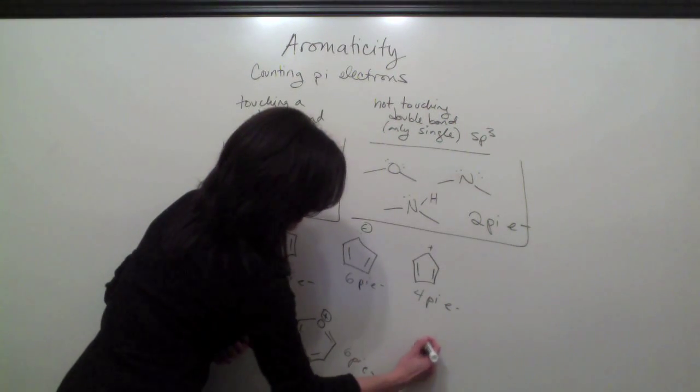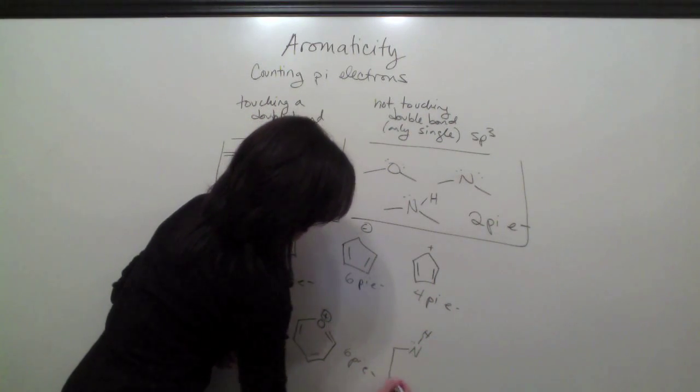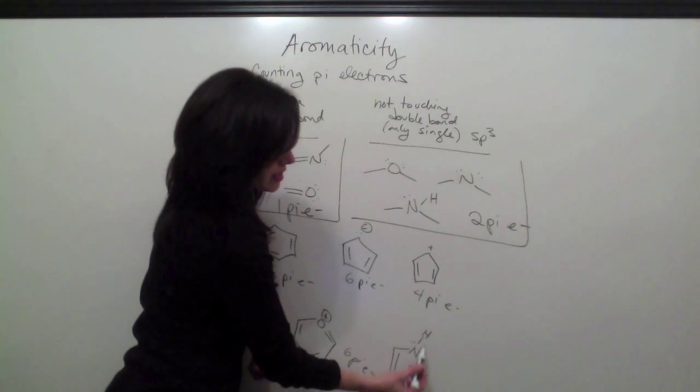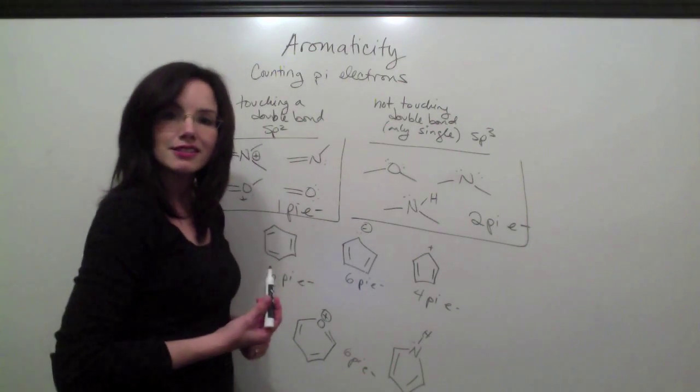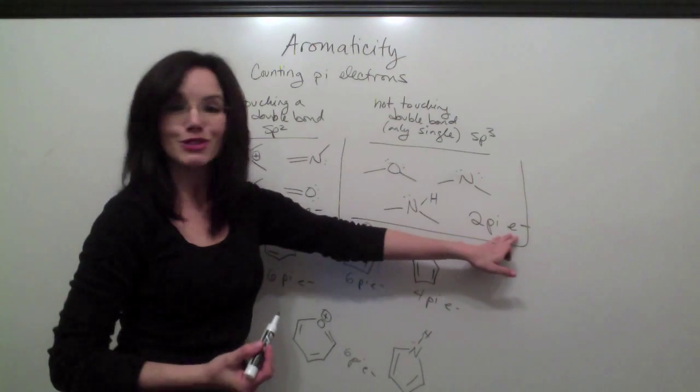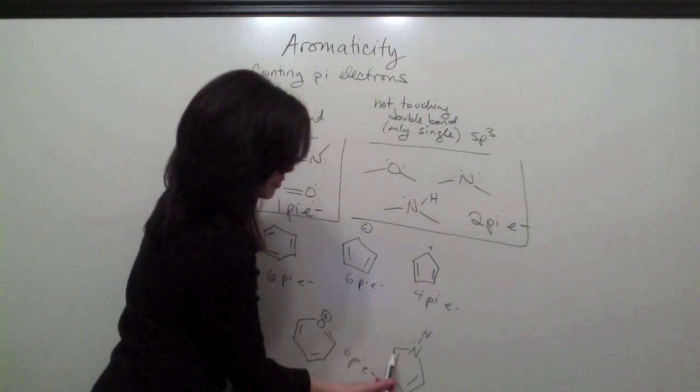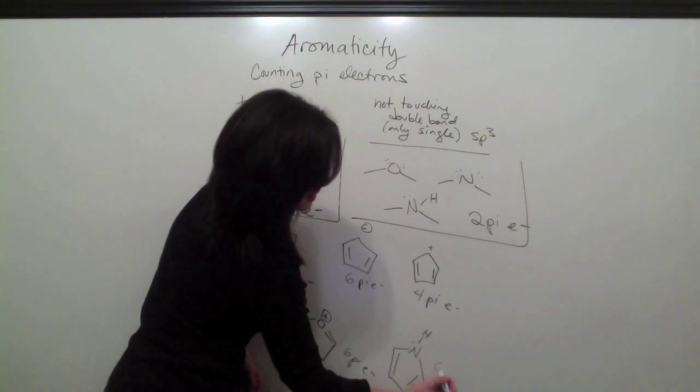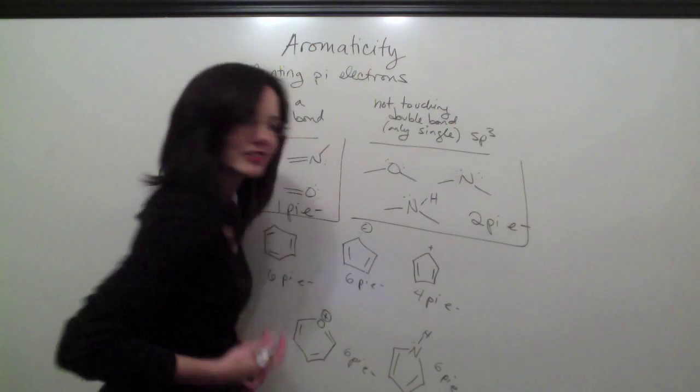Here's an example where we have a nitrogen that's touching only single bonds. Only single bonds means it's sp3 hybridized, and it counts as two pi electrons. So we count this one, two, three, four, five, six, six pi electrons.